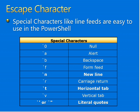Form feed ejects the current page and continues printing to the next page. New line: the new line character `n creates a break immediately and gives output on the next line. Carriage return: the carriage return character `r eliminates all output on the current line prior to the `r character. Horizontal tab: the horizontal tab character `t advances to the next tab stop and continues writing.